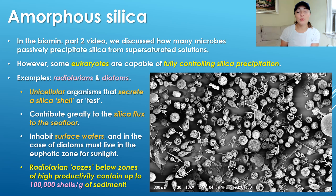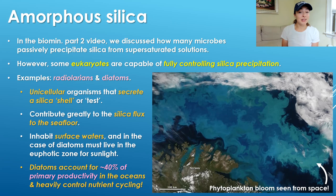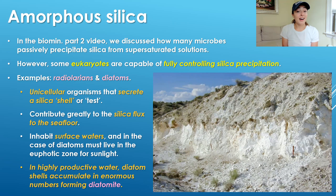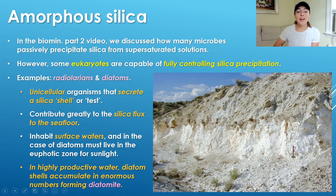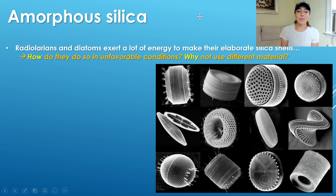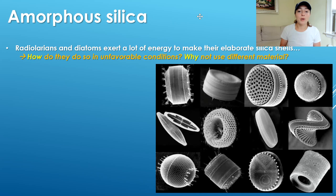In terms of sheer abundance, radiolarian oozes can occur below zones of high productivity and contain up to 100,000 shells per gram of sediment. Diatoms might be even more impressive — they account for 40% of primary productivity in the oceans and heavily control global nutrient cycling. In highly productive water, diatom shells can accumulate in enormous numbers to produce what's called diatomite in the rock record. It's interesting that radiolarians and diatoms produce silica shells since it takes a lot of energy, and the ocean doesn't contain that much silica, making it not necessarily an energetically favorable process.